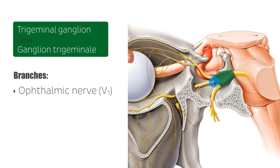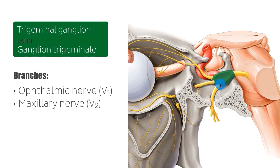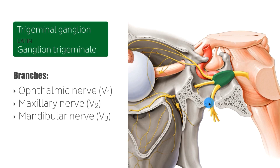Again you see here the maxillary nerve, and the focus of this tutorial, the mandibular nerve. The ophthalmic and maxillary nerves only carry sensory fibers, whereas the mandibular nerve carries both sensory and motor fibers.